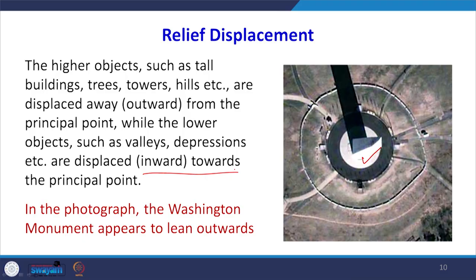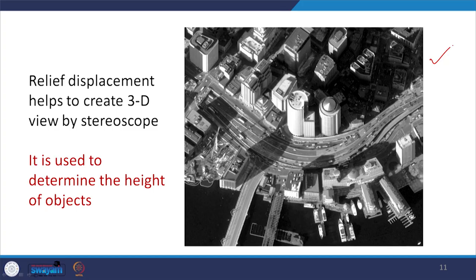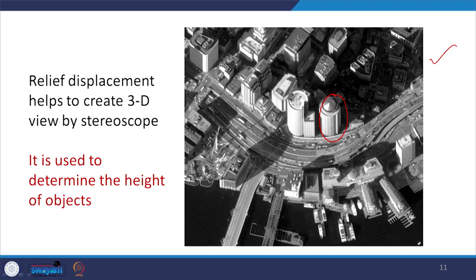In this particular photograph, you can see the Washington Monument leaning outward — so it is situated at comparatively higher ground. This is another photograph where relief displacement is present and for many buildings we can see the top as well as the bottom of the image. Relief displacement helps us in two ways: we can determine the height of objects by measuring the top-to-bottom distance, and it can help us recreate a 3D view of the area using a stereoscope.